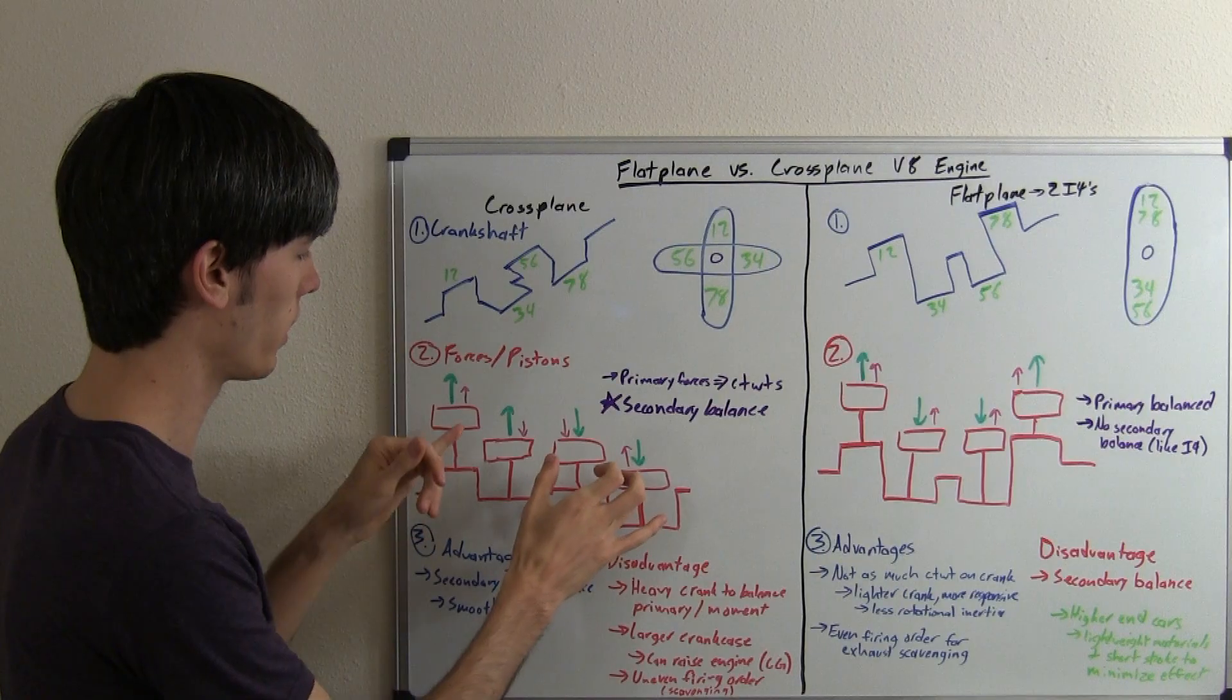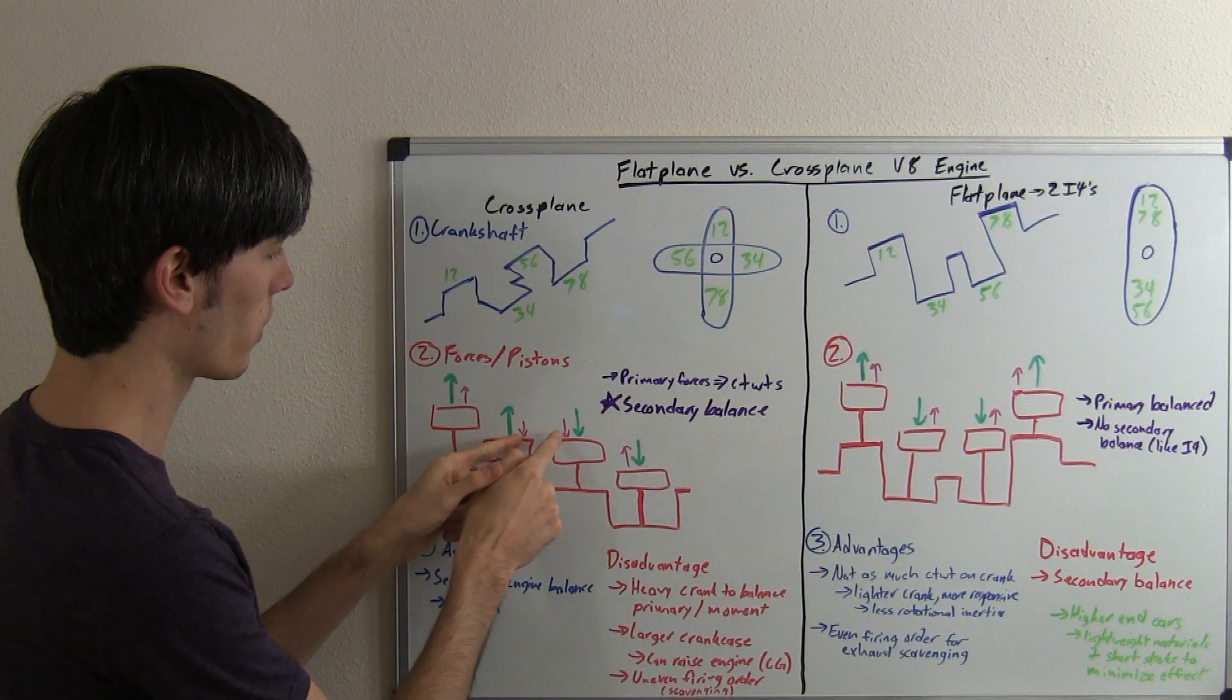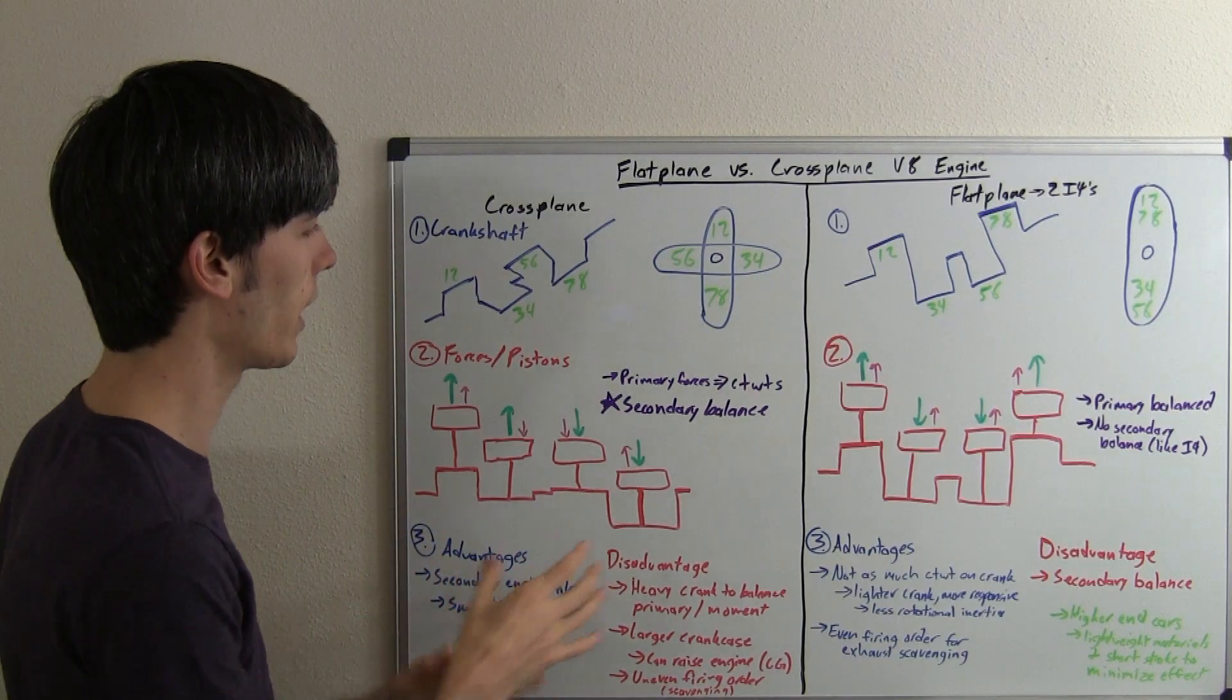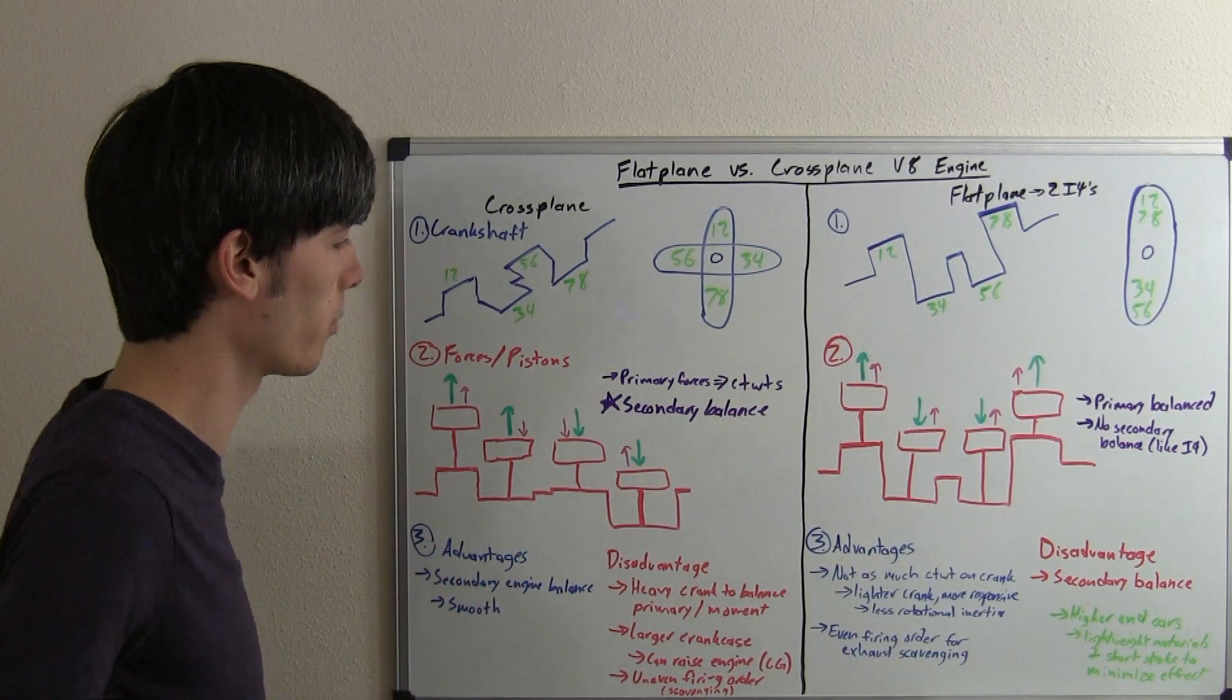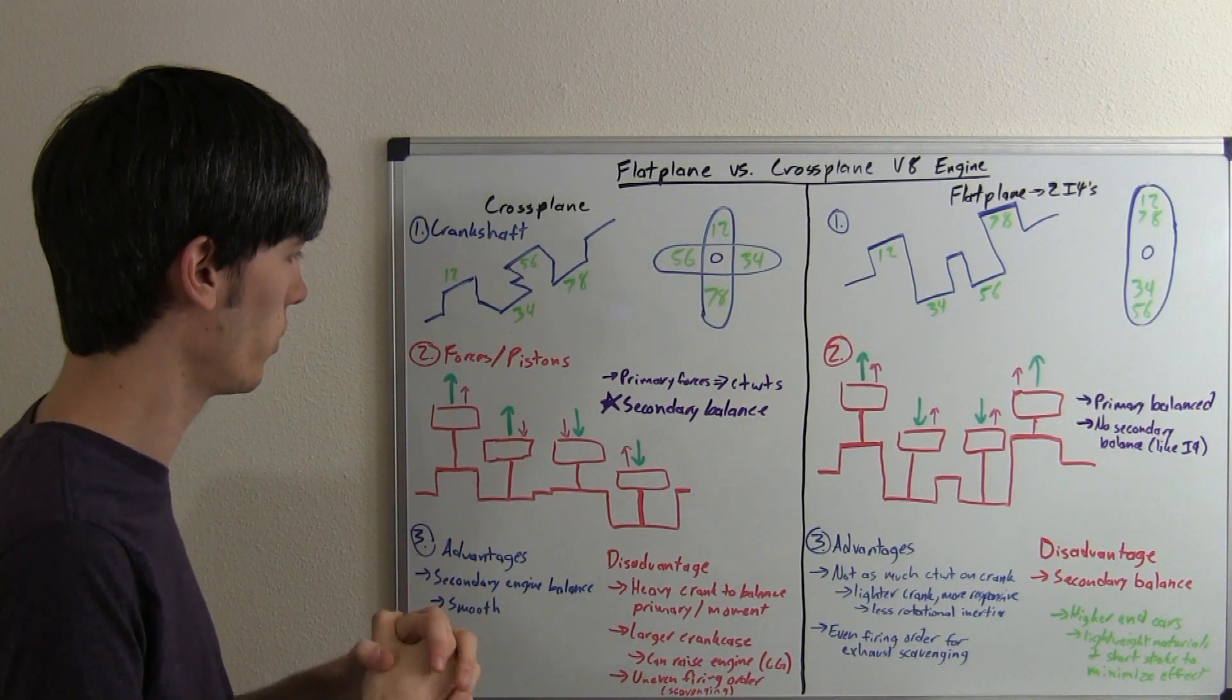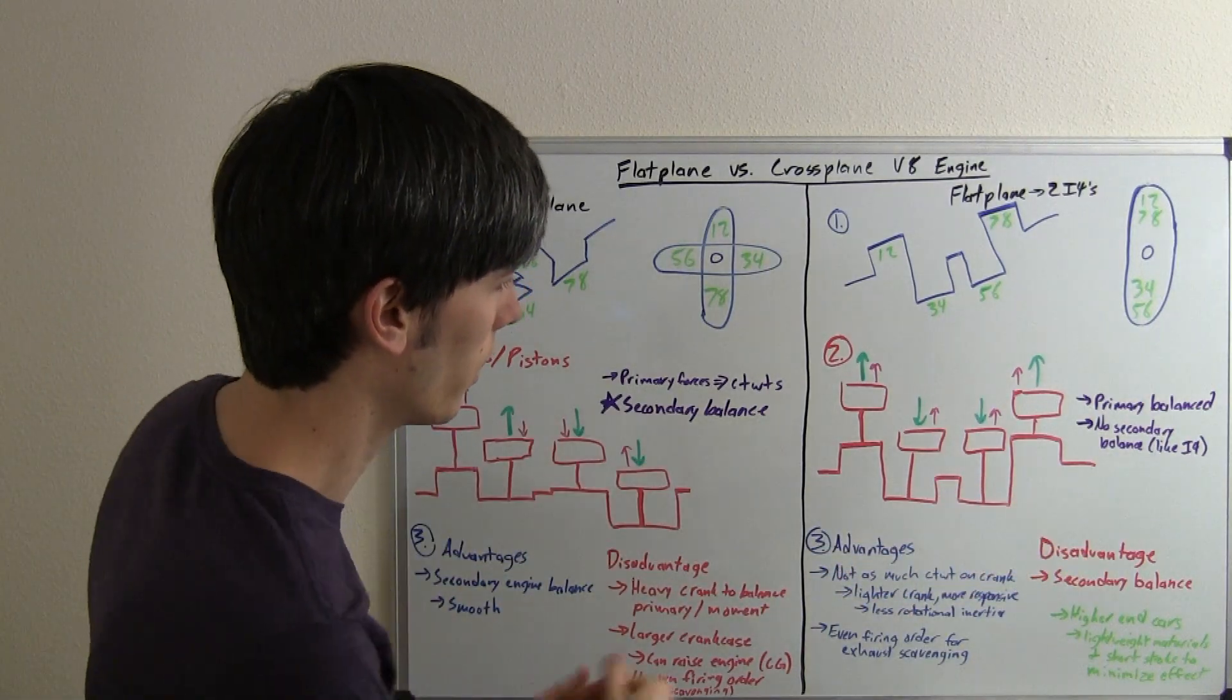Now the great thing about cross-plane V8 engines, and why they are used, is look at the secondary forces. So we've got two forces going down, two little forces going up. These are going to balance each other out, hence it's going to have a secondary balance. So now that's the great thing, that's why this engine is used, but let's look at a flat-plane engine.